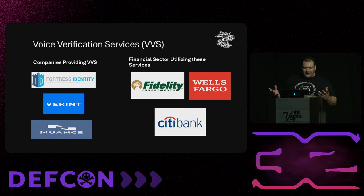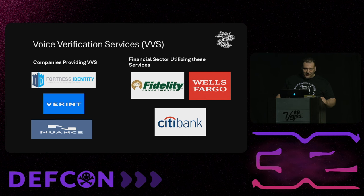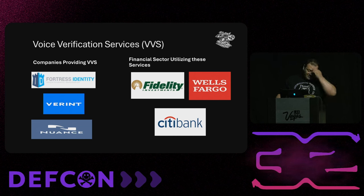Voice verification services are provided by companies like Nuance, Variant, and Fortress Identity. They're used by financial institutions such as Fidelity Bank, Wells Fargo, and Citibank for secure authentication. While many commercial products can create realistic voice clones, they cannot defeat voice verification services used by financial institutions, which detect anomalies through mel spectrograms. Although these services enhance security through voice biometrics, they remain vulnerable to exploitation. Today, I'll discuss the methods used to bypass these technologies and the adversarial training required to enable a voice clone model to bypass anti-spoofing verification systems.